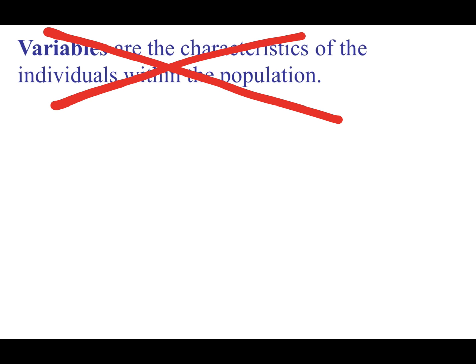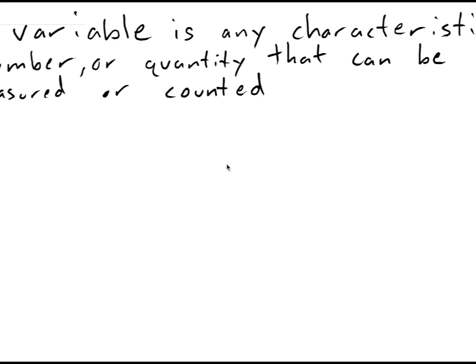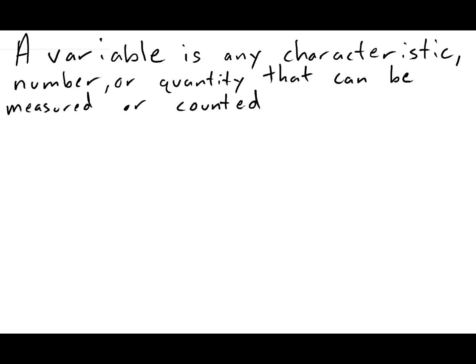Here is a better definition. A variable is any characteristic, number, or quantity that can be measured or counted. I like this because it's a little bit more broad. We're not necessarily just measuring something from the population.